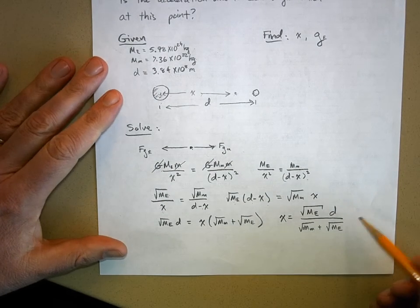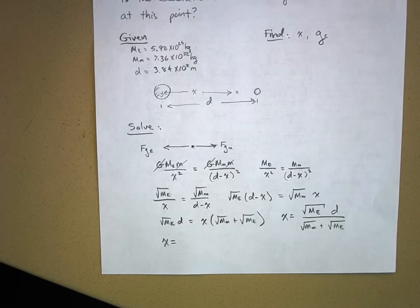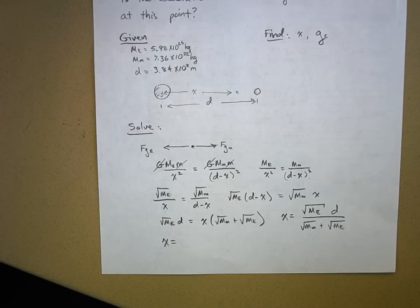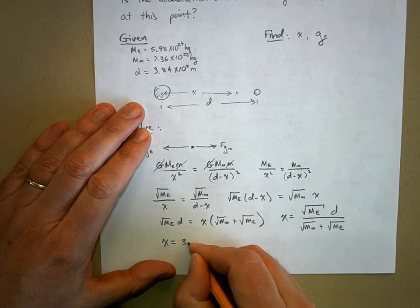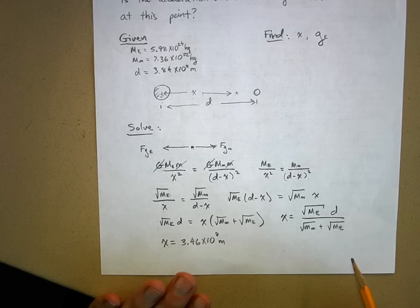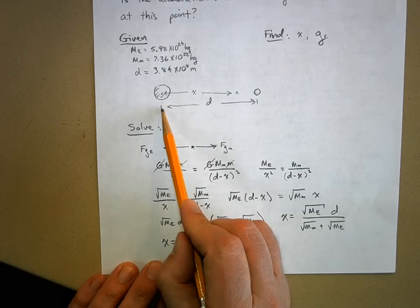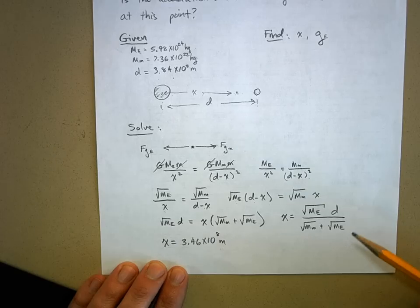Plugging in the mass of the earth, the mass of the moon, and the distance D into that expression gives x equals 3.46 times 10 to the 8 meters. Let's check if that makes sense: the total earth-moon distance D is 3.84 times 10 to the 8 meters, so this balance point is very close to the moon — which makes sense since the earth is so much more massive.